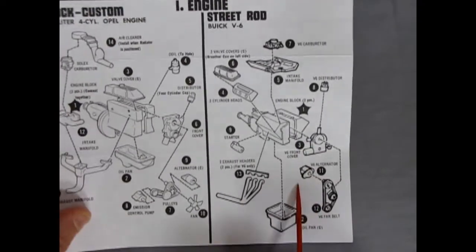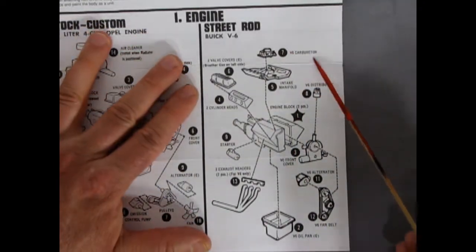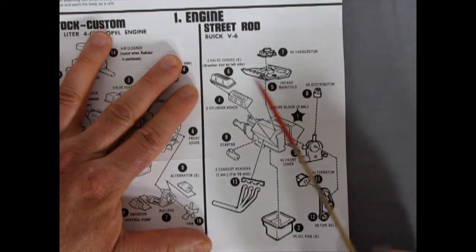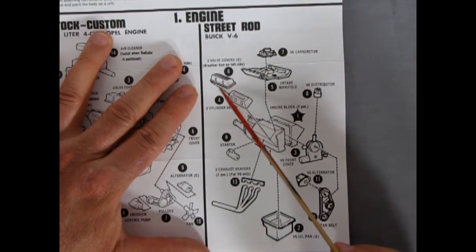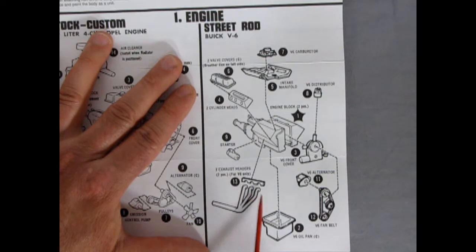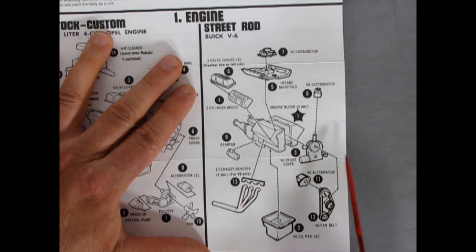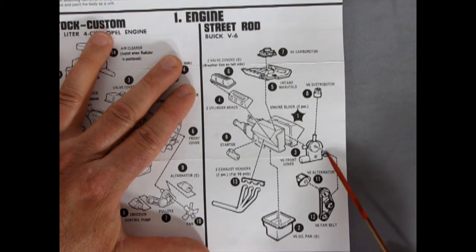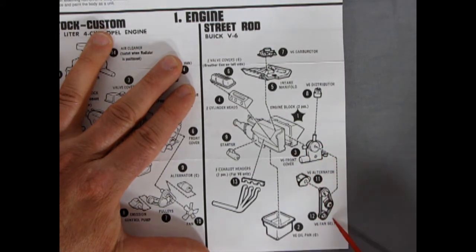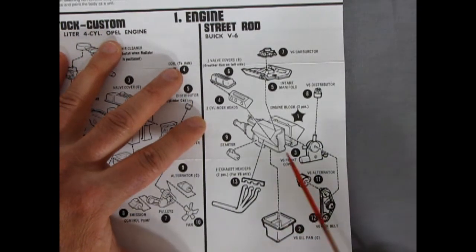Then as we move over here. For our street rod. We do get the Buick V6. With a V6 carburetor. The intake manifold. Chrome valve covers on both sides. Cylinder head. The two engine blocks with the transmission molded to the back. Then we have the starter. Exhaust headers with the little plate you have to glue on. A V6 distributor. The front cover. The alternator. The fan belts. And this little box style oil pan which goes up underneath.